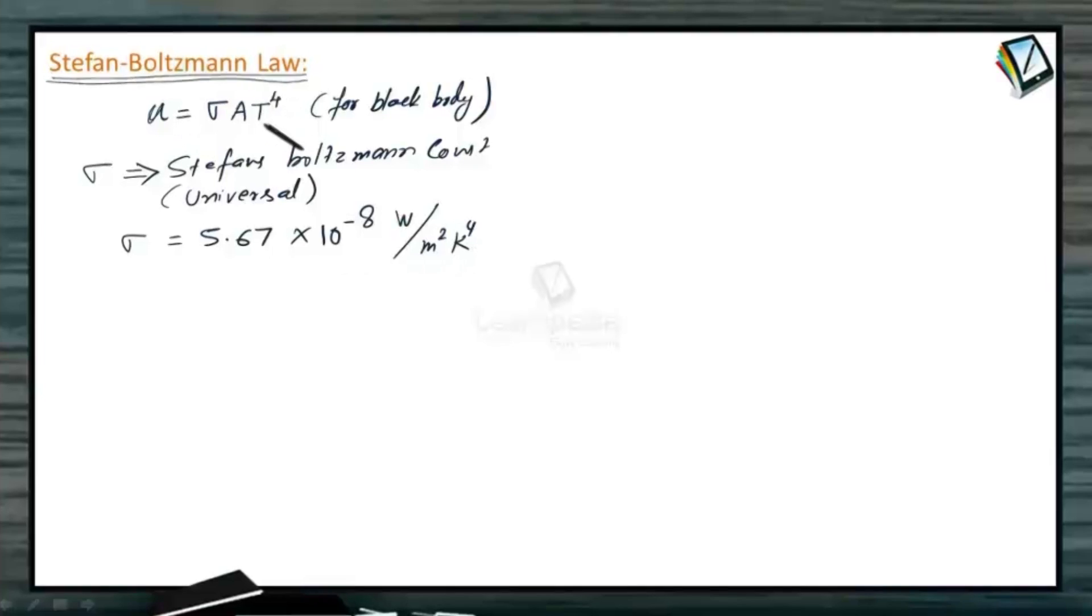The unit is something that you can see from here because this U, U is amount of energy radiated per unit time, U is amount of energy radiated per unit time by the black body.